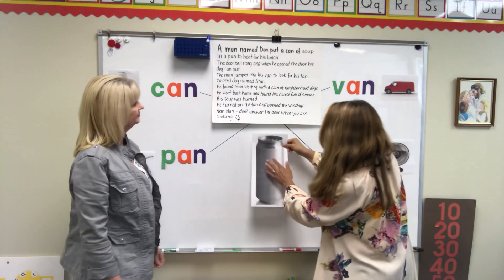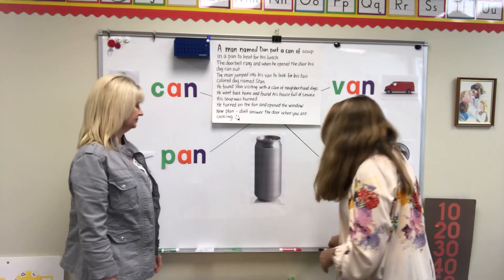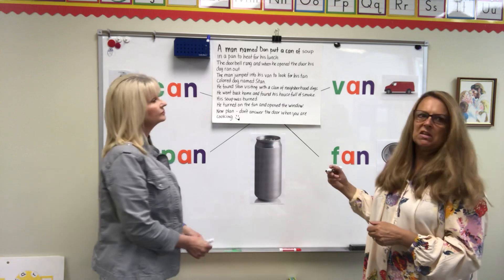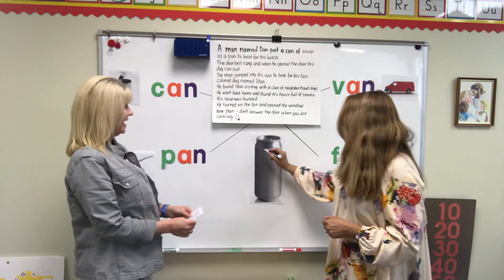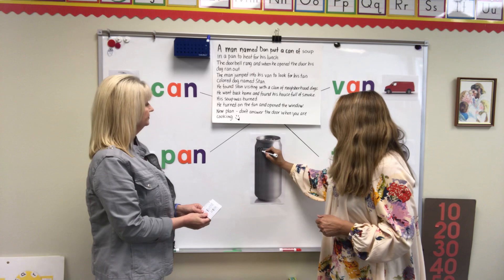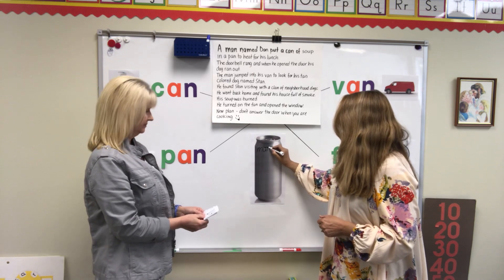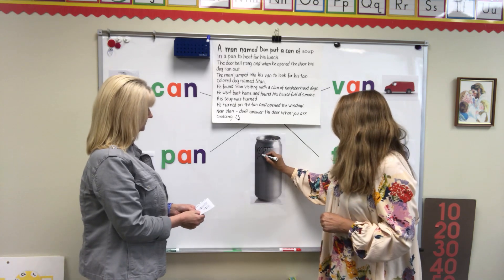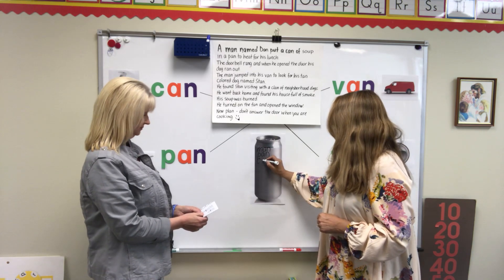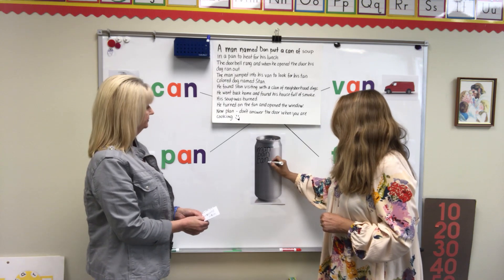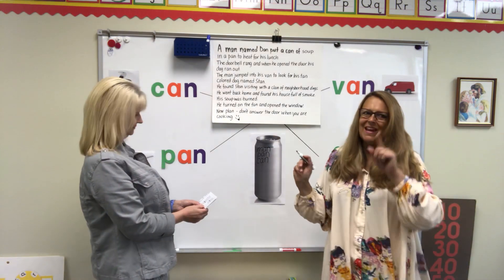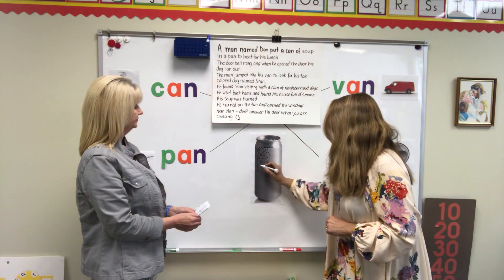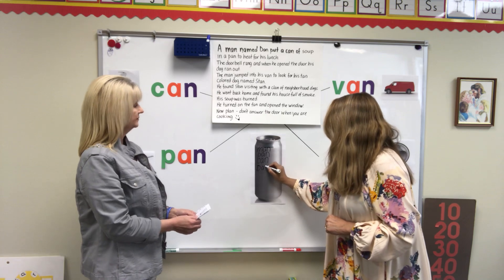Ms. Trish, you want to give me the list of words? I have man — M-A-N. Pan — P-A-N. Can, of course. Dan — Dan is a name, so we have to use a capital. Capital D-A-N. And another name: Stan — capital S-T-A-N.